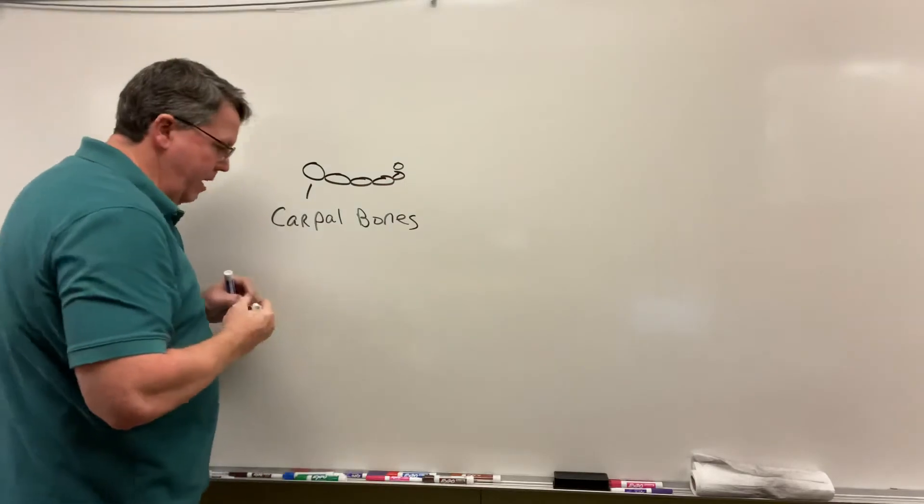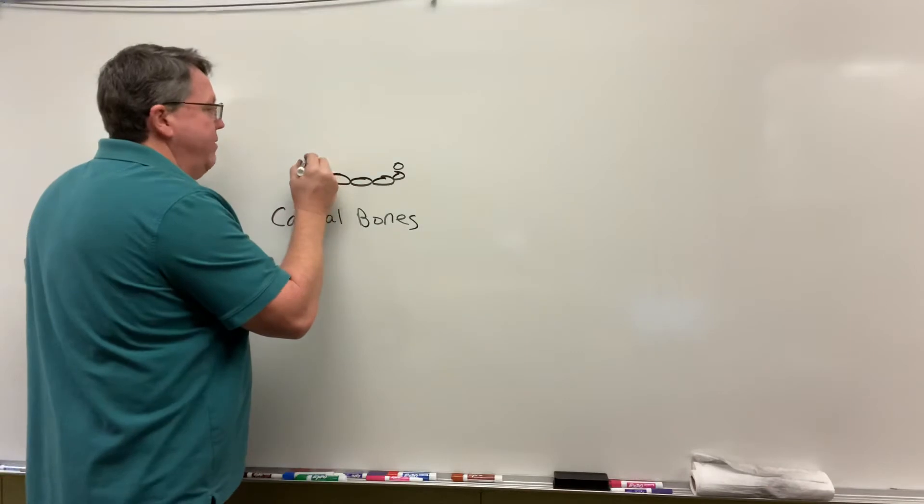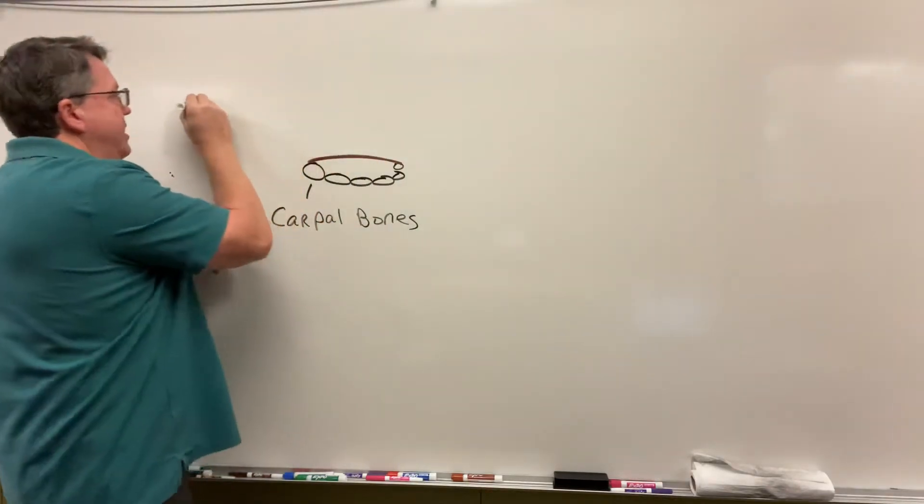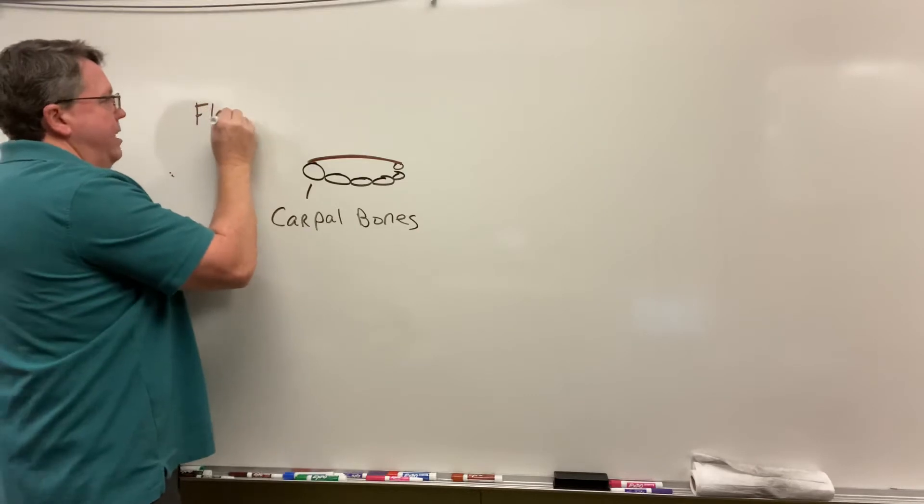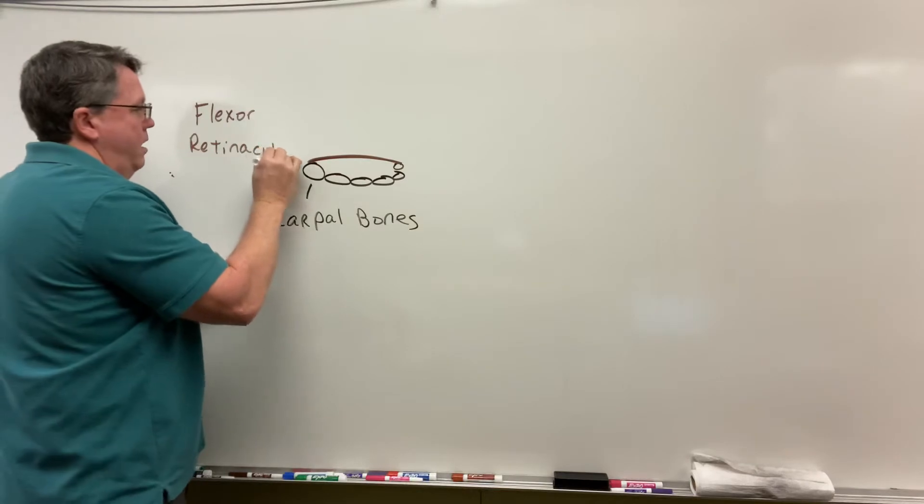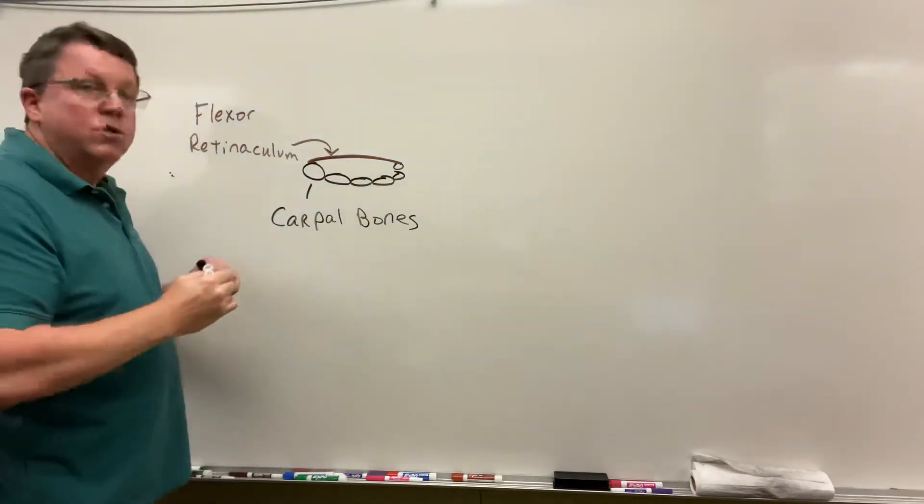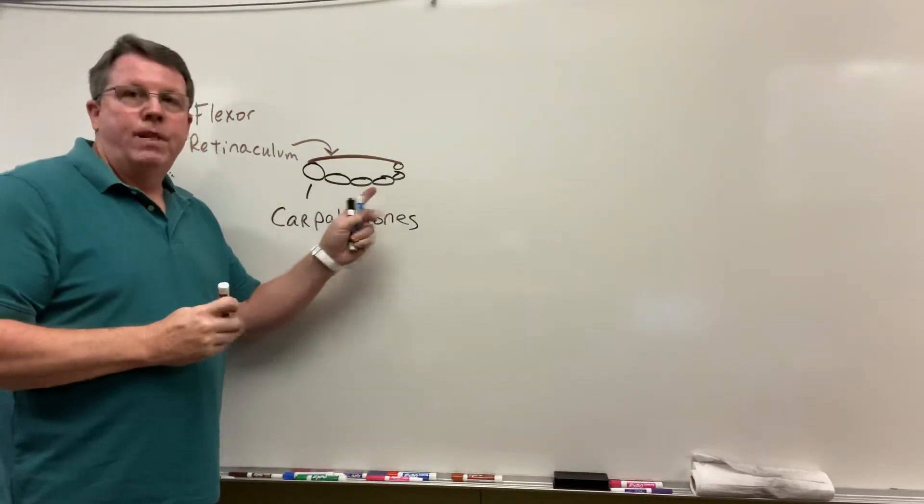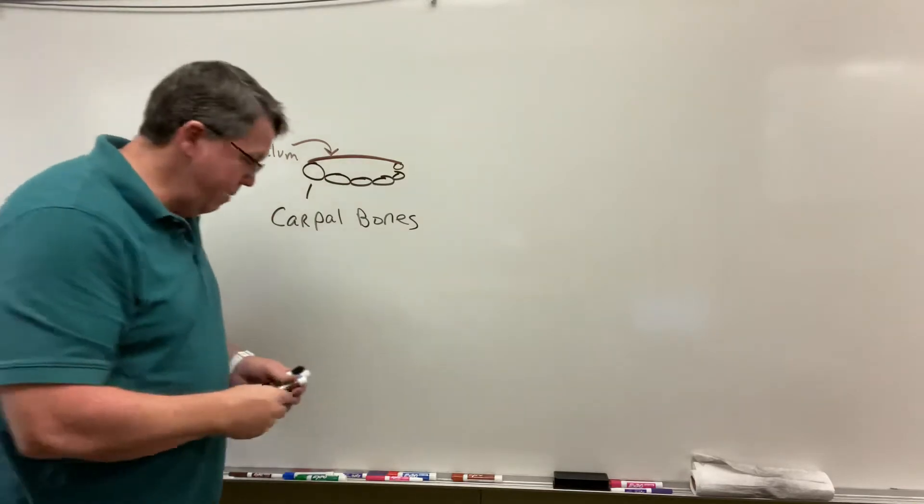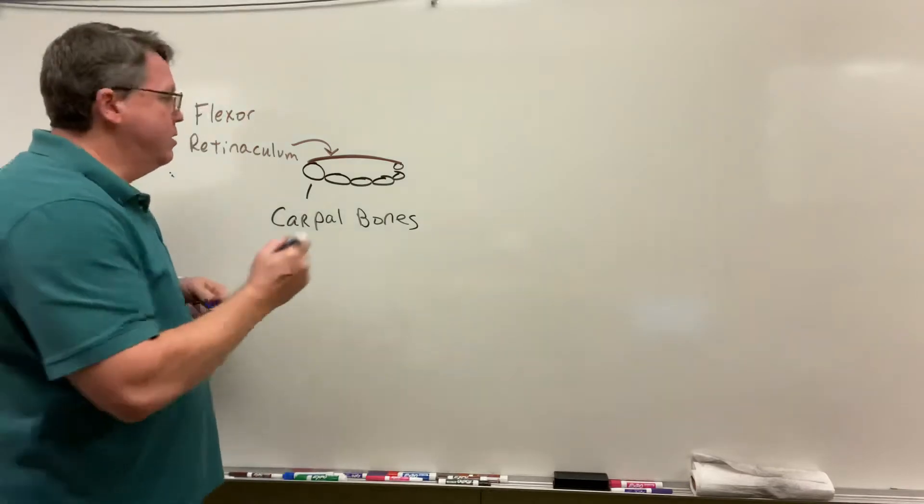On top of the carpal bones, going across the top, we actually have a ligament that is called the flexor retinaculum. What happens is we have the bones down here and the ligament up here. I'm going to have my median nerve, which came out from the neck, come down and go through this right here.